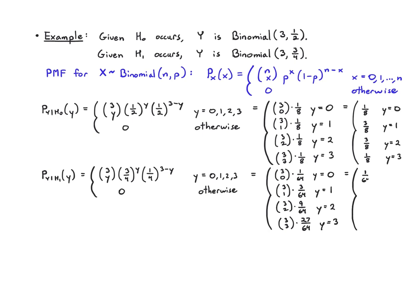Working this all out, I get 1 over 64 when y is 0, 9 over 64 when it's 1, 27 over 64 when it's 2, and again 27 over 64 when it's 3.